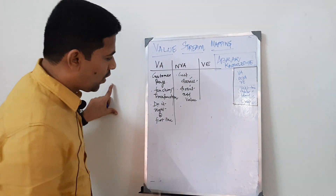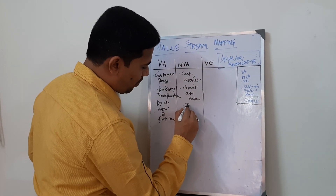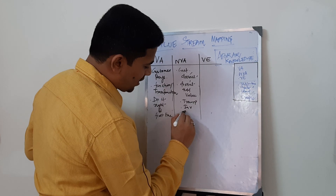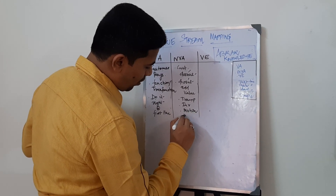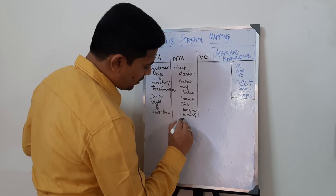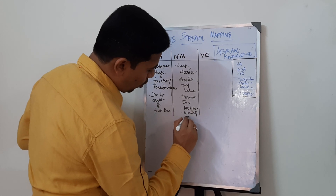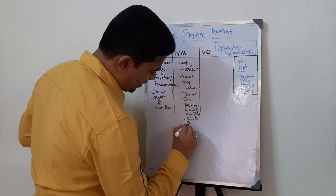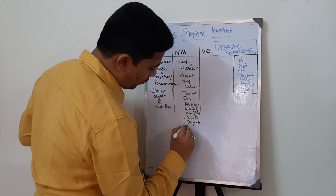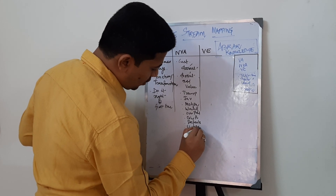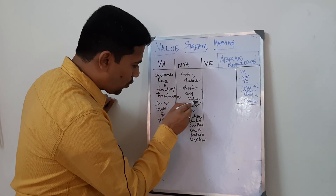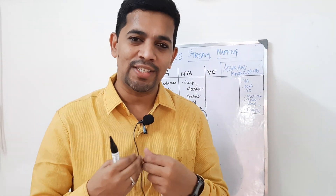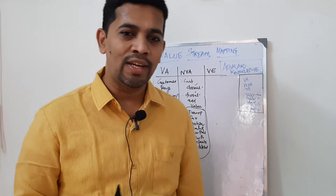Another concept we have is something called TIM WOOD. Any wastages you have — the wastage is coming from transportation, inventory, motion, waiting time, and TIM WOOD stands for: over production, over processing, defects or defective, and unutilized skill. Anything which falls under all of these things, we need to take into the value stream mapping, convert this as a case, and find a solution for all of these. If you find any problematic area, you address it.